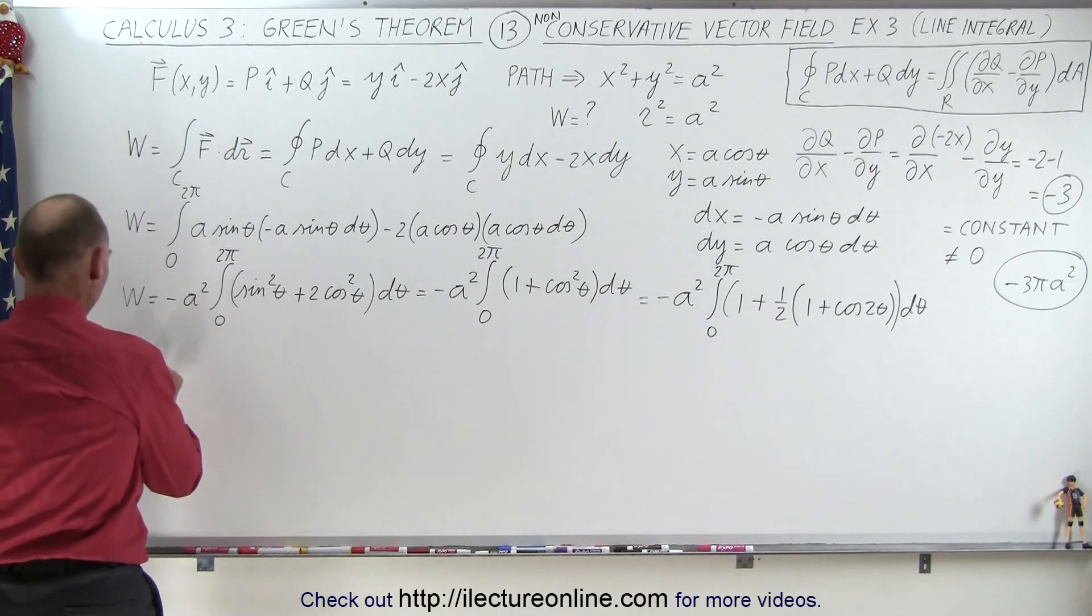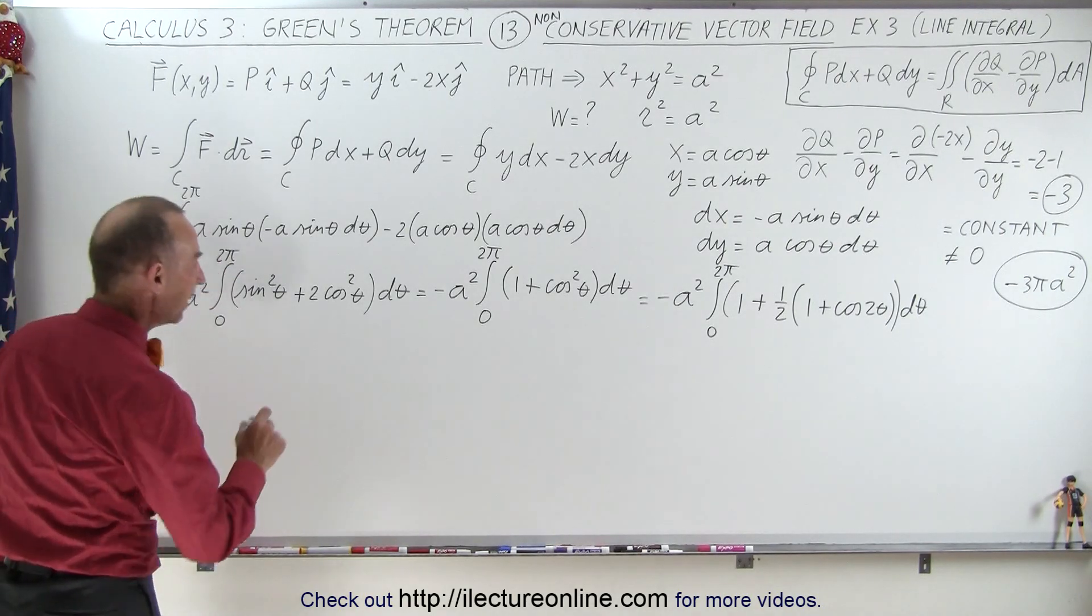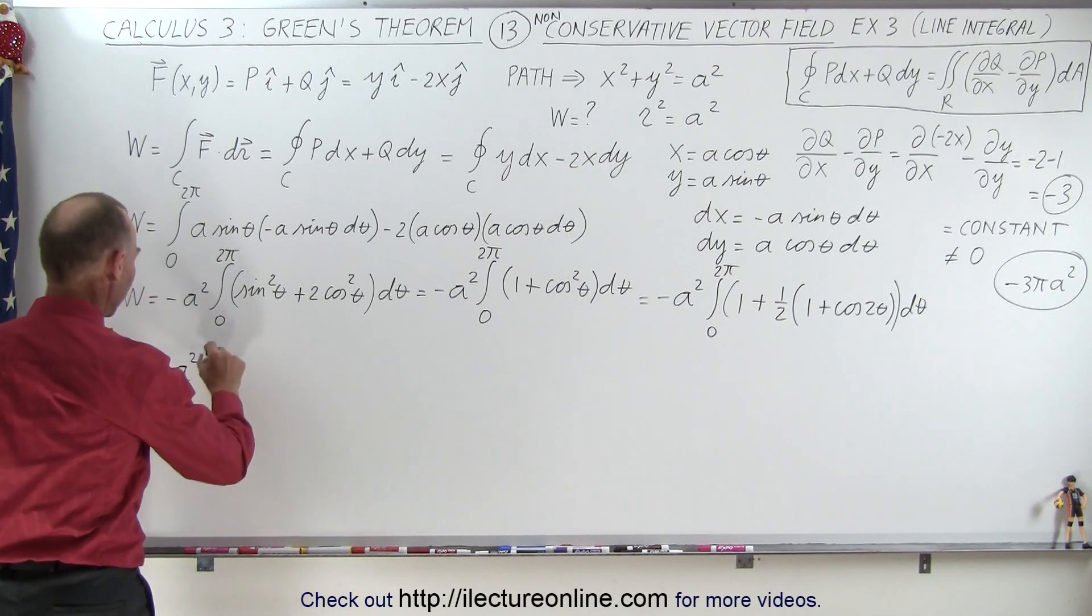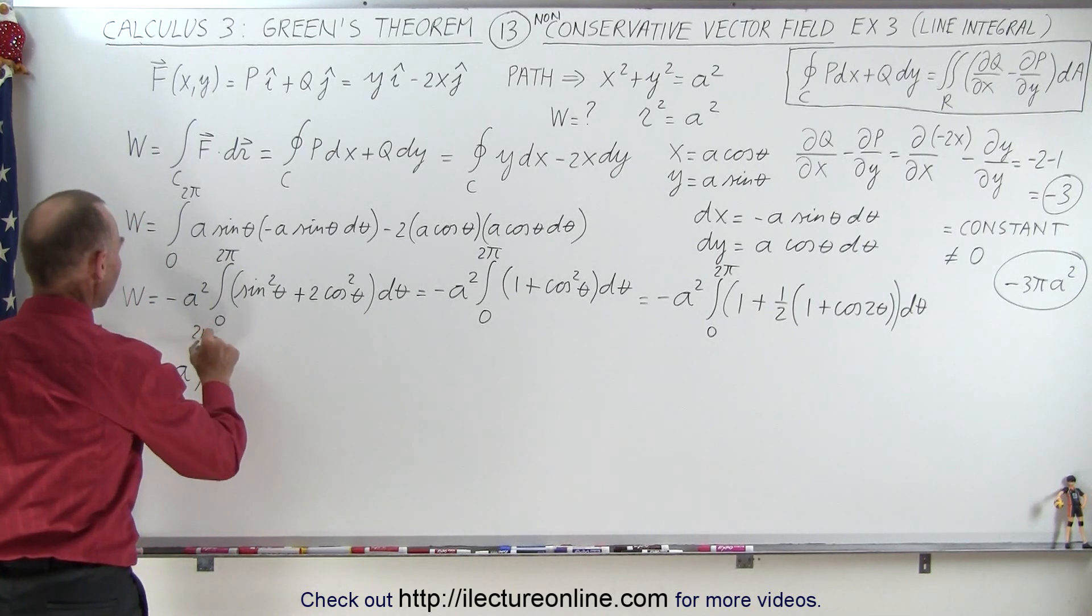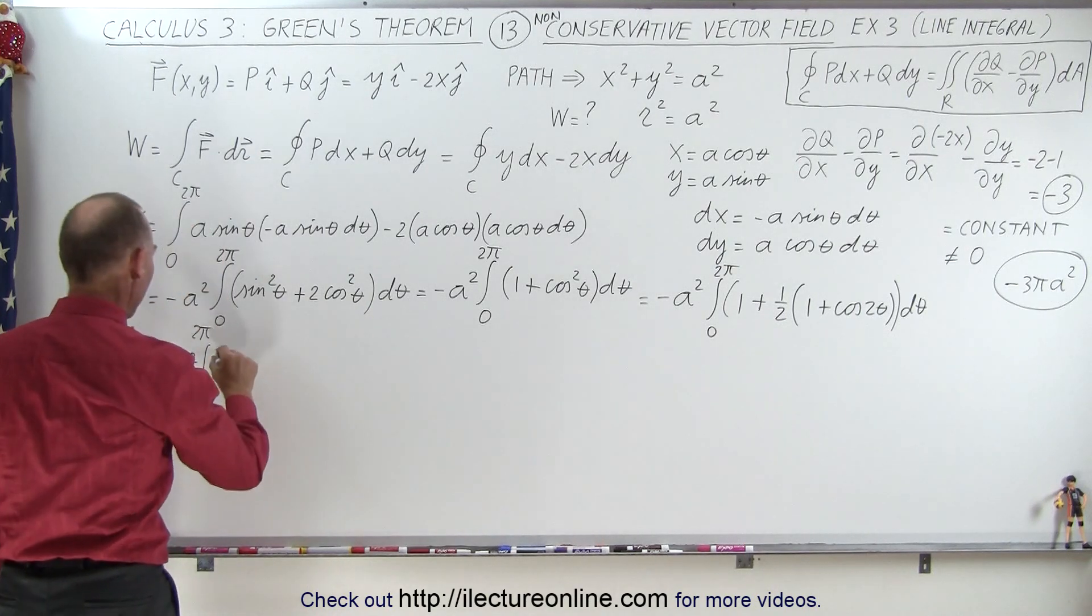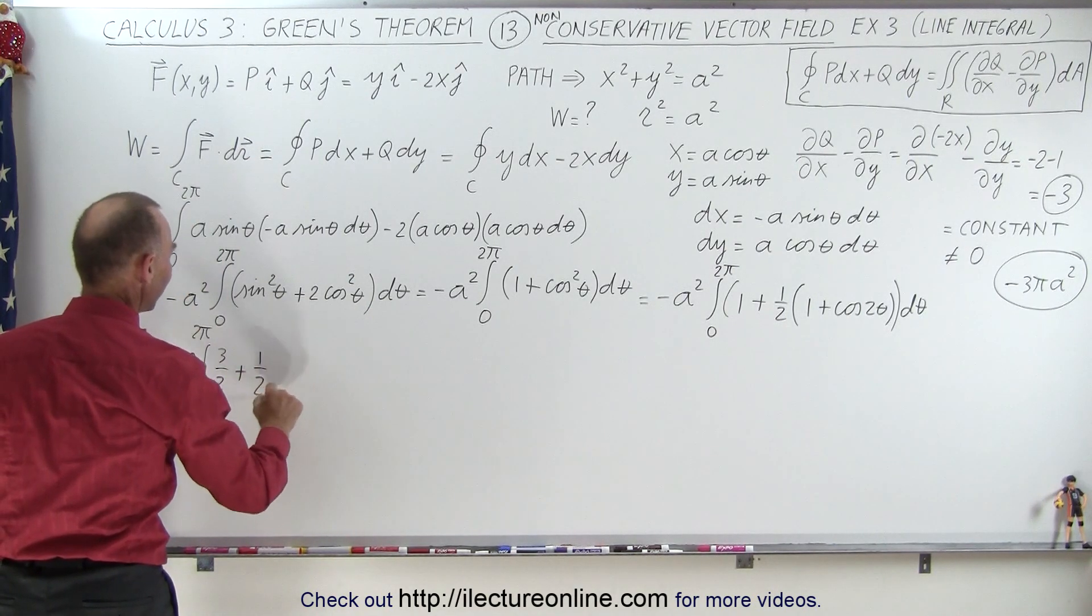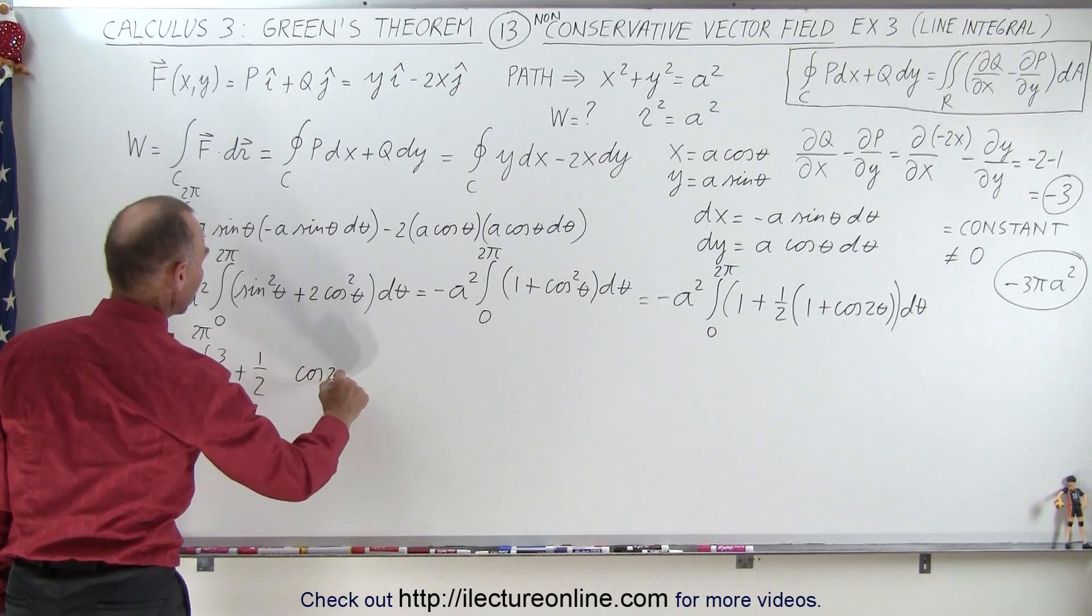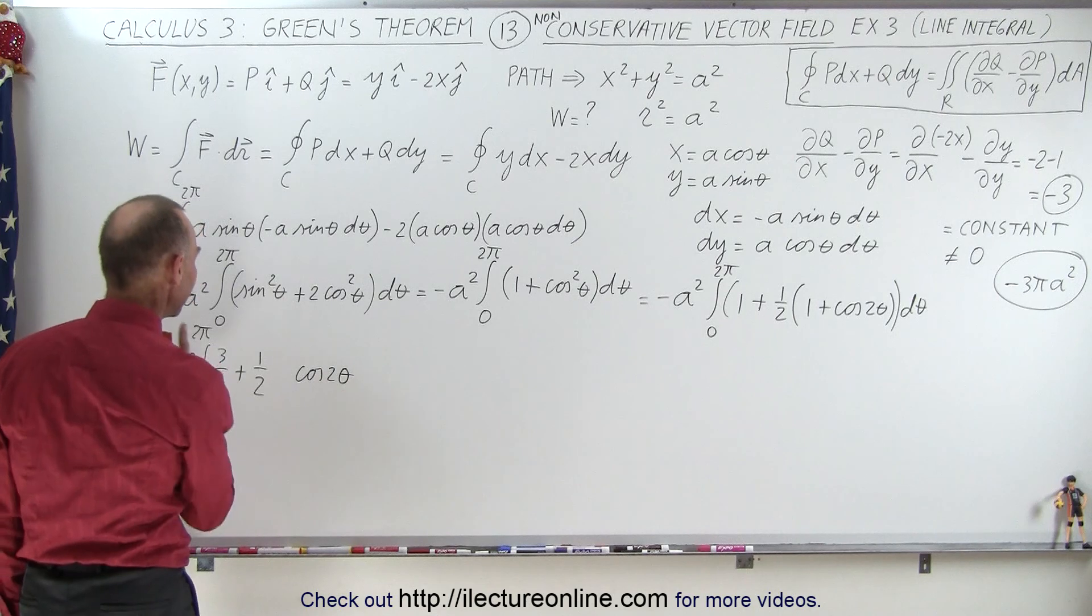So this becomes equal to minus a squared times the integral from 0 to 2 pi of 1 plus 1 half, so that would be 3 halves, plus 1 half times, I'm going to leave some room here, of the cosine of 2 theta d theta.